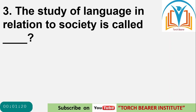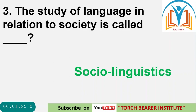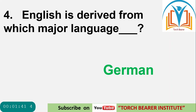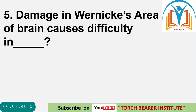Question 3: The study of language in relation to society is called? The answer is sociolinguistics. Question 4: English is derived from which major language? The answer is German — English is a Germanic language.